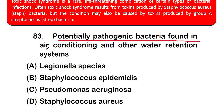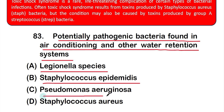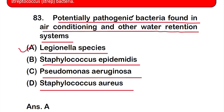Question number 83: Potentially pathogenic bacteria found in air conditioning and other water retention systems. Option A: Legionella species, option B: Staphylococcus epidermidis, option C: Pseudomonas aeruginosa, option D: Staphylococcus aureus. The correct answer is option A — Legionella species are the potentially pathogenic bacteria found in air conditioning and other water retention systems.